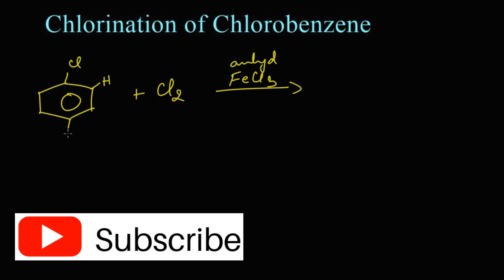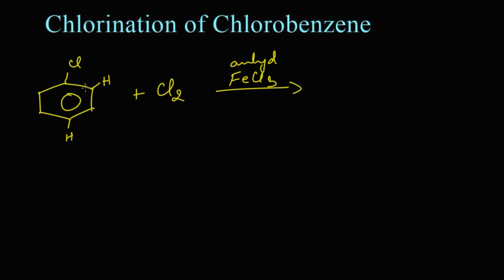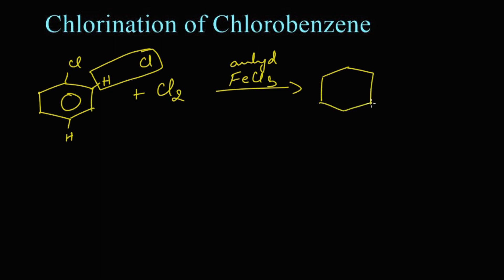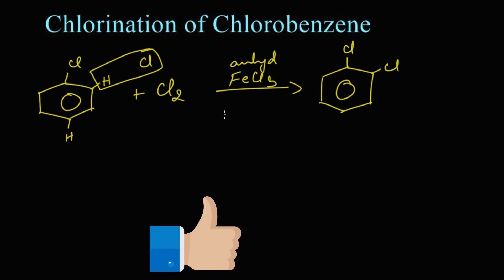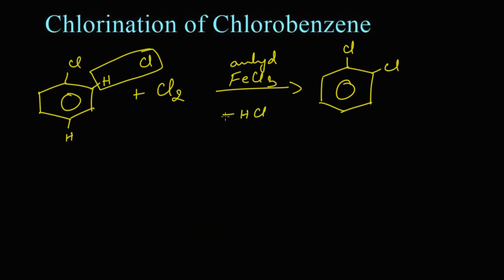There will be a hydrogen in the ortho position as well as in the para position. If the reaction takes place in the ortho position, a Cl from the chlorine molecule and the hydrogen in the ortho position will leave as HCl, and we get ortho dichlorobenzene with Cl and Cl on the ring.